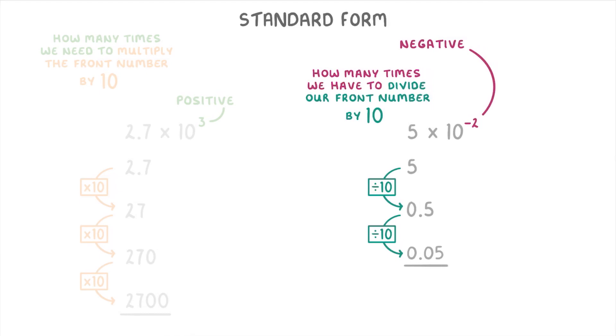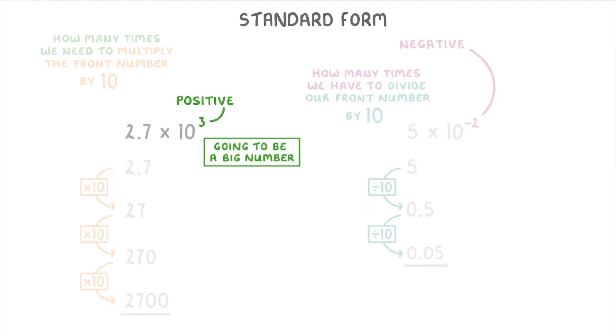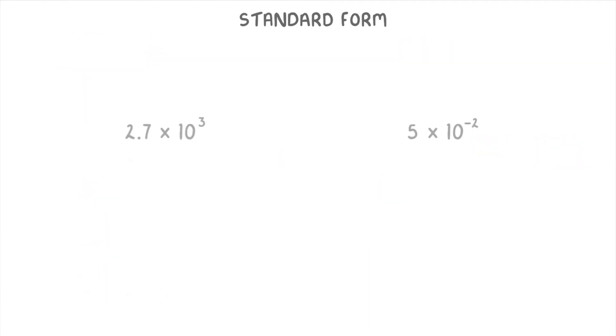And so if you think about it, this means that anything with a positive index is going to be a relatively big number, whereas anything with a negative index is going to be a fairly small number.